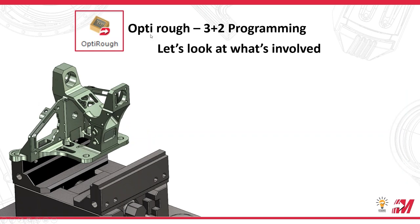When we talk about 3 plus 2 programming, we want to understand what's involved. It's coming from different planes to machine a part. When we're talking about 3 plus 2, we're on a 5-axis machine, accessing different planes around the part. At any given time, five axes are locked when you're machining, but you've only got 3-axis motion in that plane. Then two of the axes are free to rotate to a different plane and start machining again.